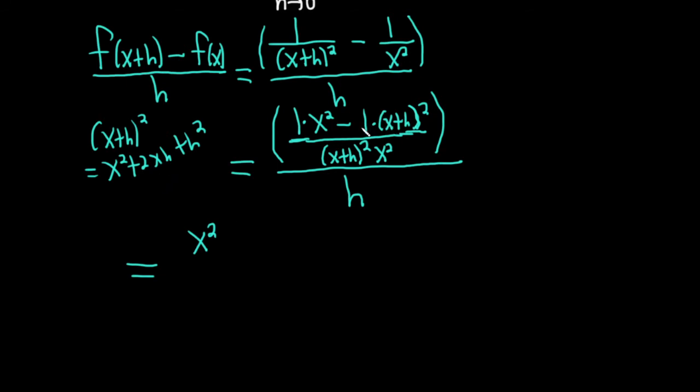There's a minus 1 here, so basically we're going to put minus 1s in front of all of this. So minus x², minus 2xh, minus h². All of this is still under the LCD (x+h)²·x². It's all in parentheses, really important, and it's all over h.